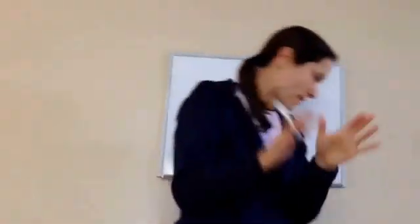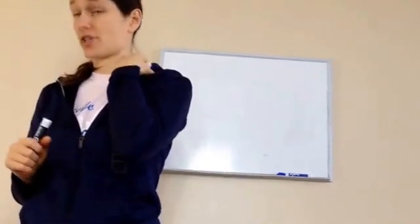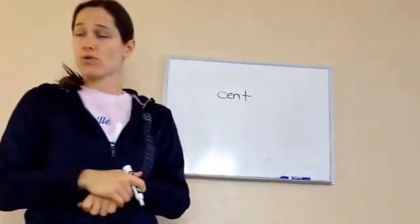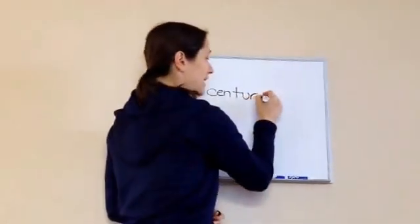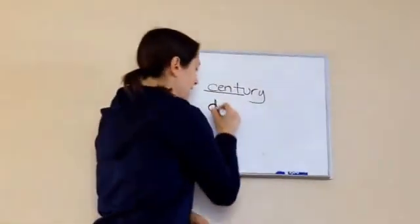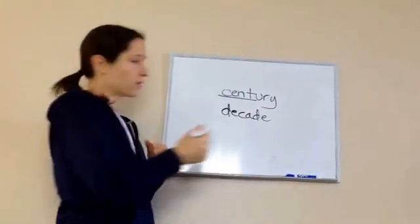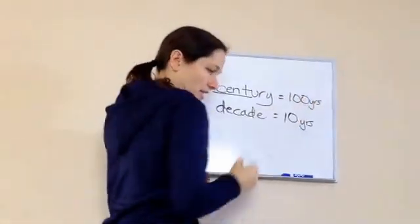Now that we've talked about all that — do you know what a decade is? 10 years — very good. And do you know what a century is? 100 years — very good. The way I remember 'cent' is how many cents equal a dollar? 100 — 100 pennies. So 'century' helps me remember that's the 100 one. Decade equals 10 years. 100 years equals a century.